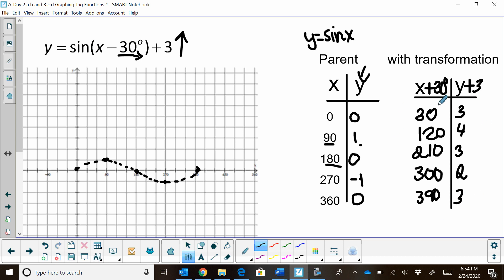These 5 points are now my 5 points of my transformed graph. So I'm going to graph these in a different color. At 30 degrees I'm at 3. At 120 degrees I'm at 4. At 210 I am back at 3. At 300 I'm at 2, and at 390 I'm back to 3. I'm going to connect these, and you can see the sine graph.